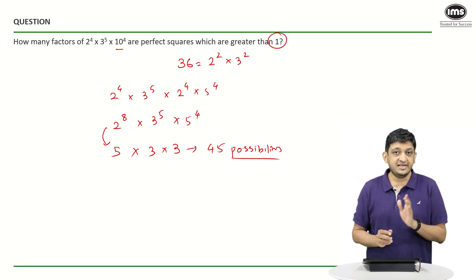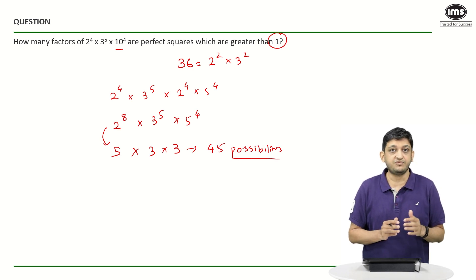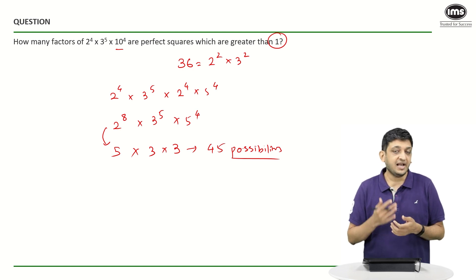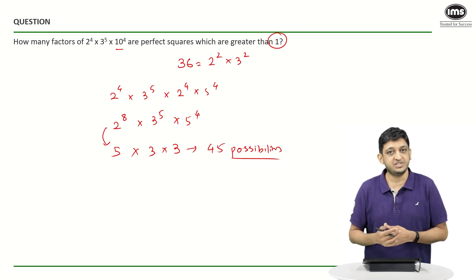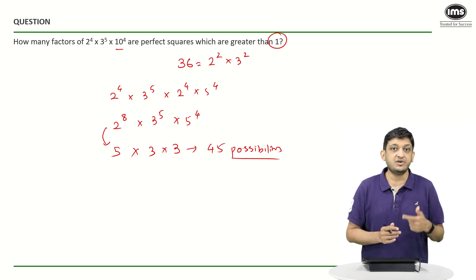Why? Because we need perfect squares that are greater than 1. Of all these possibilities that we have written, there will be one possibility wherein the power chosen for 2 will be 0, the power chosen for 3 will also be 0, and the power chosen for 5 will also be 0.